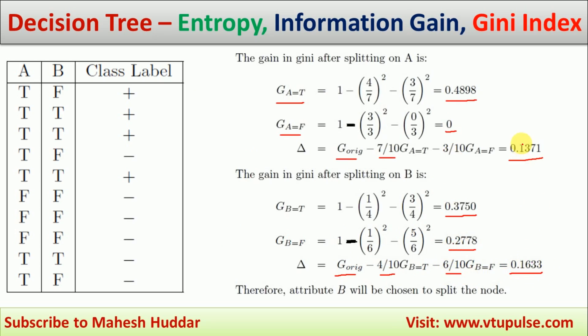Now, if you compare the gain of A (0.1371) and gain of B (0.1633) in terms of Gini, the gain of B is more. Hence, B is the best splitting attribute in this case. This is the simplest process to calculate entropy, information gain, and gain in terms of Gini, and based on those two things you can select the splitting attribute. I hope the concept is clear. If you have any questions, put them in the comment box. If you like the video, do like and share, press the subscribe button and bell icon for regular updates. Thank you for watching.